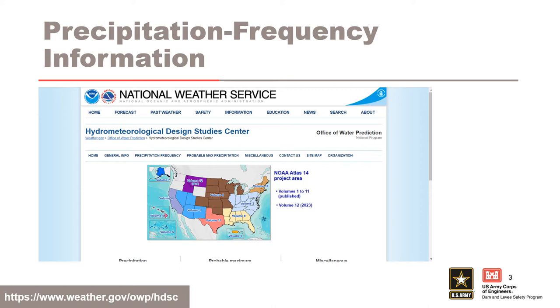The most common source of precipitation frequency information in the United States is NOAA Atlas 14, Precipitation Frequency Atlas of the United States, which supersedes many existing estimates.